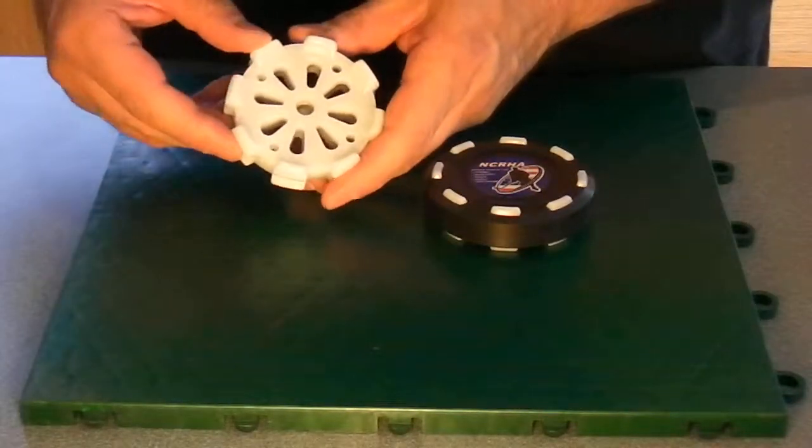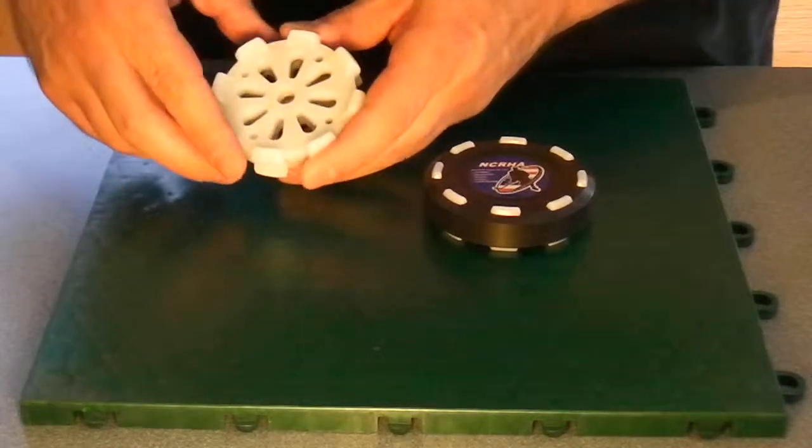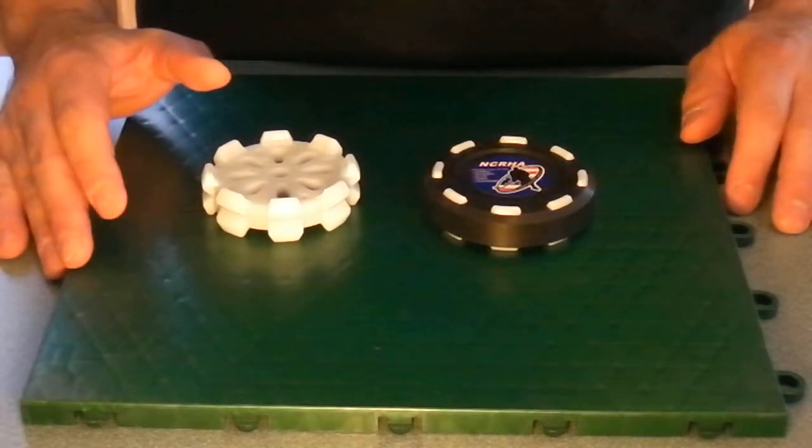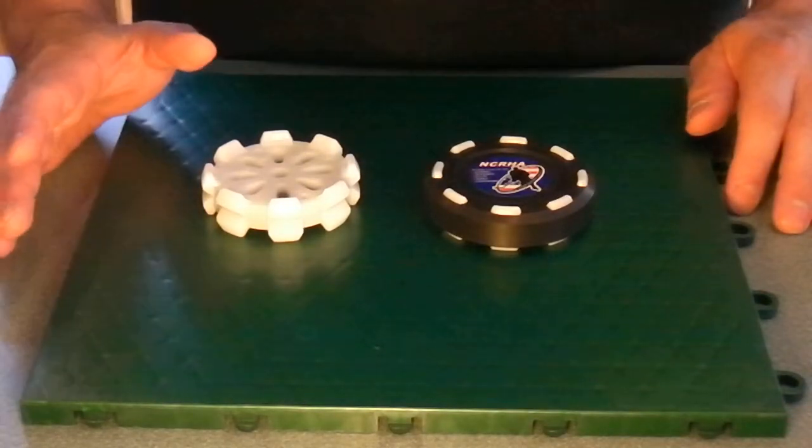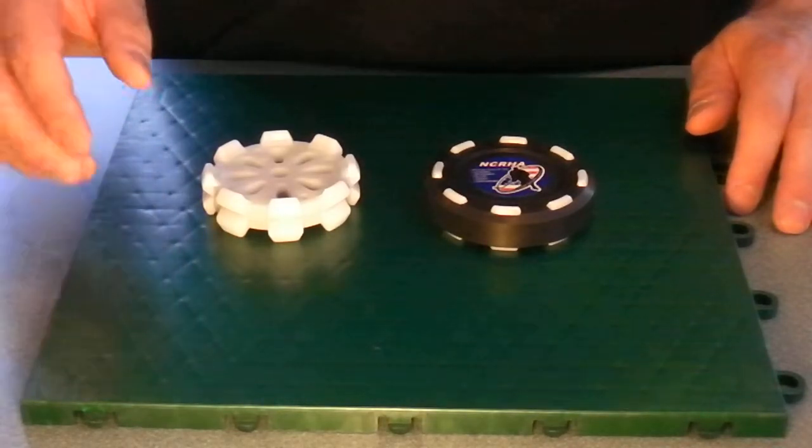I don't know if you can see it in the camera, but the center is actually weighted on the inside, which means that as we go along, if you want, we can always adjust the weight of the puck. We can make it heavier, we can make it lighter, depending upon what your preferences are.